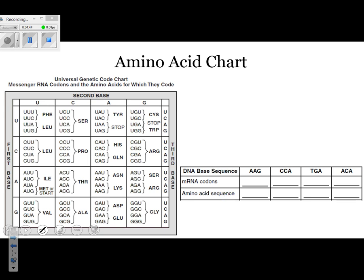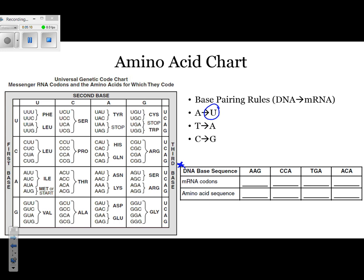Another technique that we learned is how to use the amino acid chart. The first thing you have to do — if you look on the chart, it says DNA Base Sequence, and that's given to you. We need to remember the base pairing rules for when you convert DNA to messenger RNA. A goes to U — that's a difference. T goes to A, C goes to G, and G goes to C. Now take a minute and try to figure out what your messenger RNA codes would be.